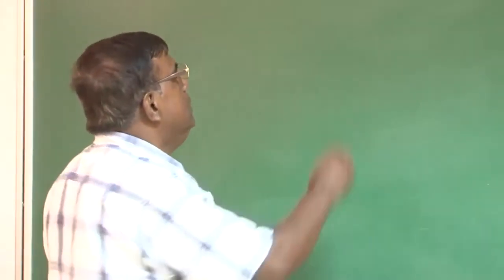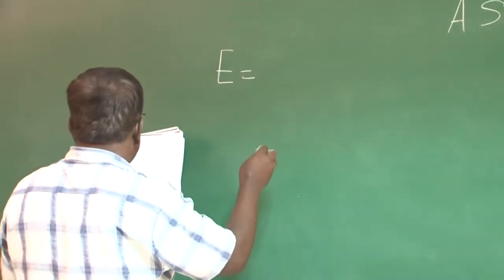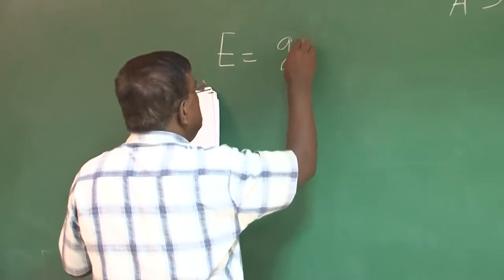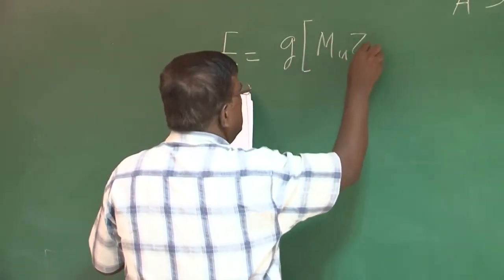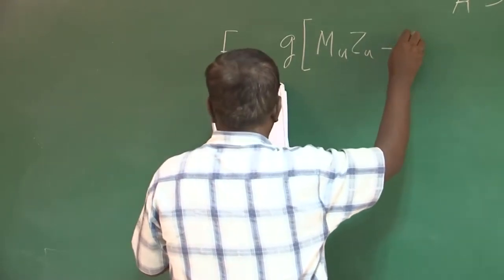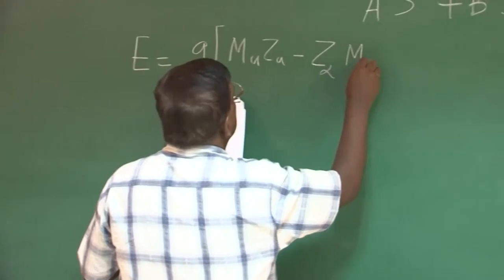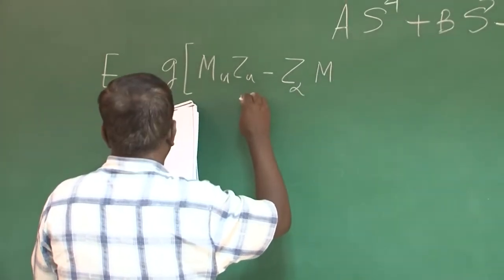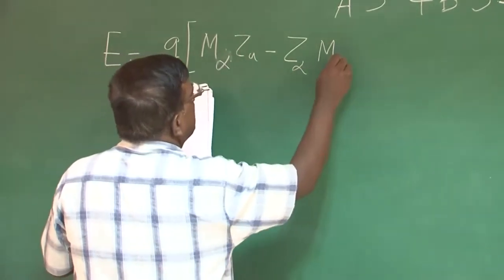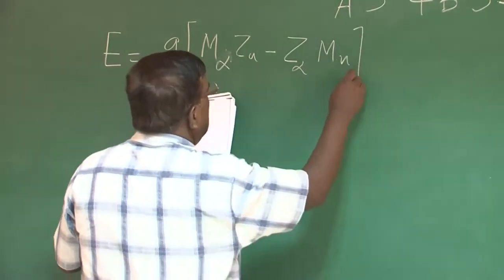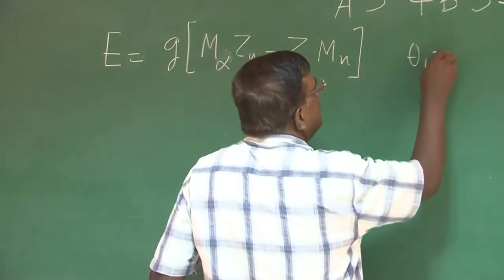As mentioned, E was given as G into m_α z_u minus z_α m_u, m_α z_u minus z_α m_u o, remember for theta_1 equal to 0.